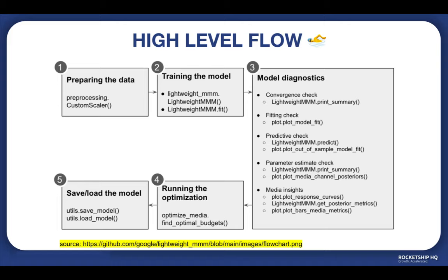Once those three steps are complete, we run the optimization — this is our primary objective, determining where to allocate the most budget for better results. We optimize our media spend and budgets in step four, and once everything is ready, we save the model. This is the high-level overview.